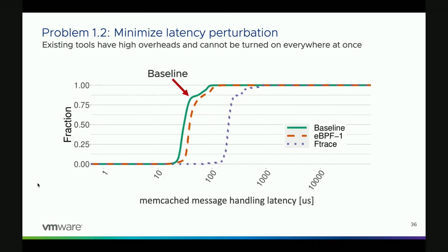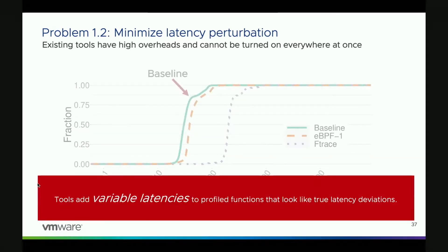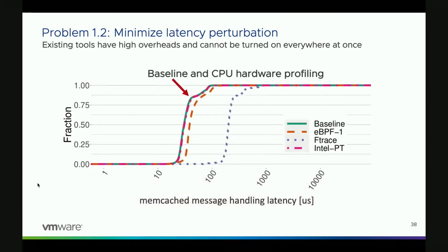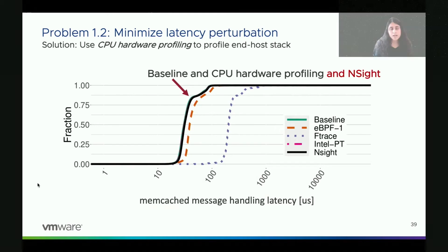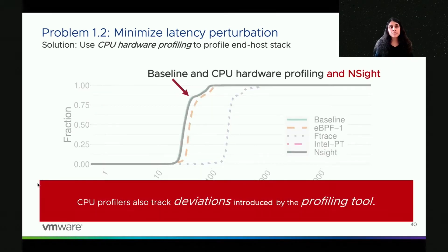We measured the latency overheads added by existing tools to Memcached messages at the end-host stack. This graph shows the CDF of Memcached message handling latencies with and without profiling. Compared to the baseline, turning on these tools even for a single point in the pipeline substantially perturbed the measurement. Note the log scale on the x-axis. eBPF advanced is already noisy when measuring one function; when measuring multiple functions, noise is an order of magnitude above the signal, and these tools add variable latencies that look like true latency deviations. In contrast, Intel PT — a CPU hardware profiler — more or less doesn't disturb the curve at all. When we use CPU hardware profiling with Insight, we get equally non-invasive measurements, and the profiler also tracks any deviations it introduces, so there is no ambiguity about where network latencies are coming from.